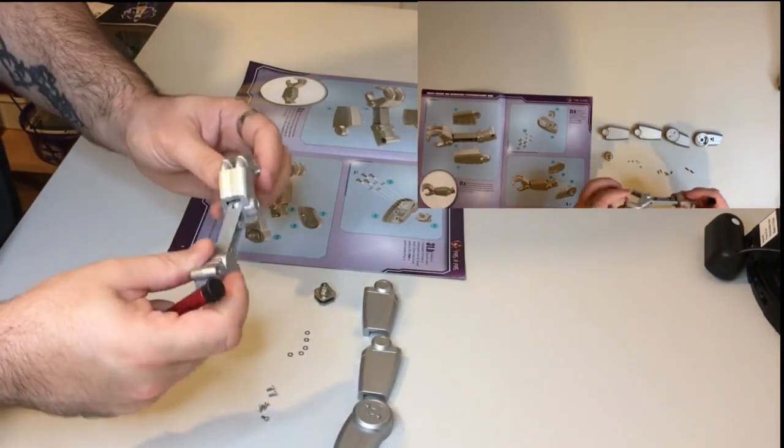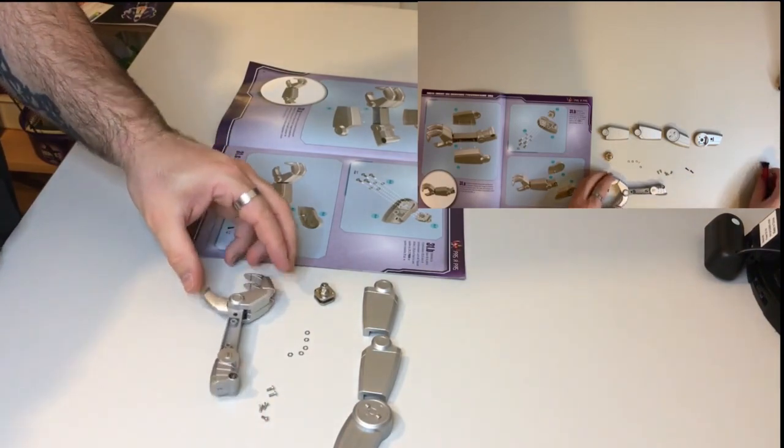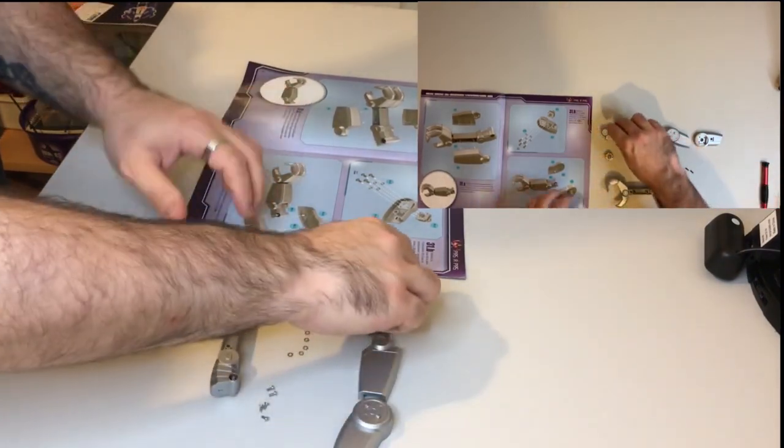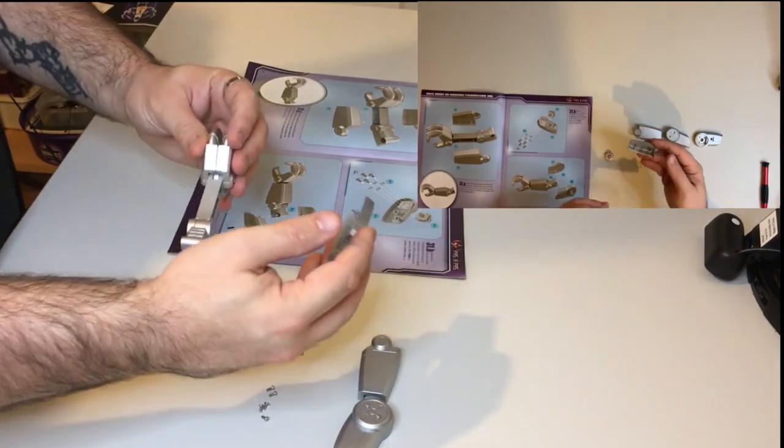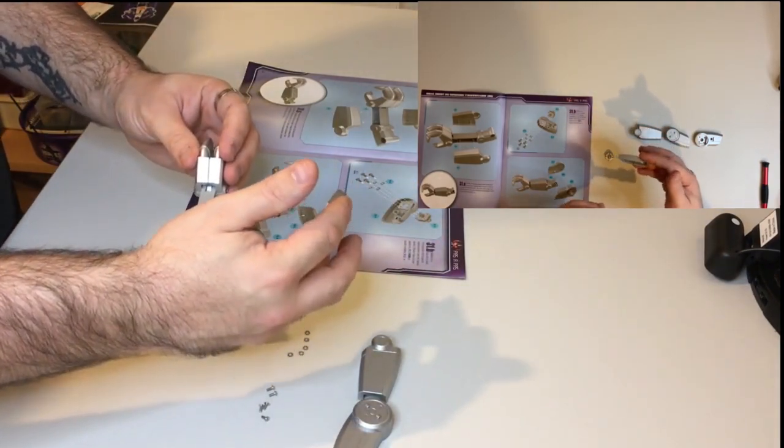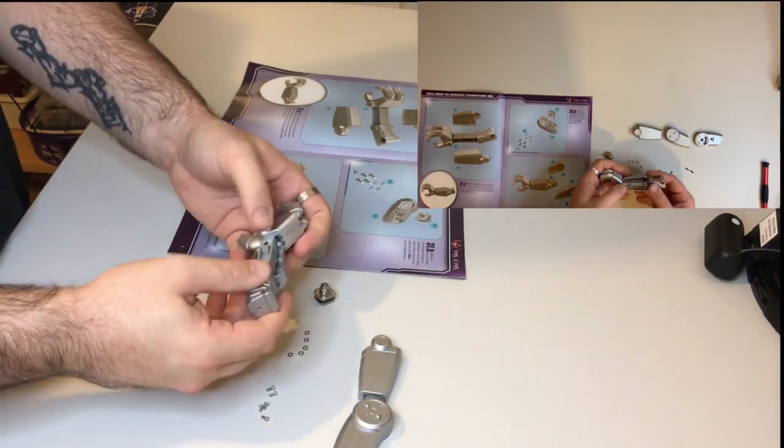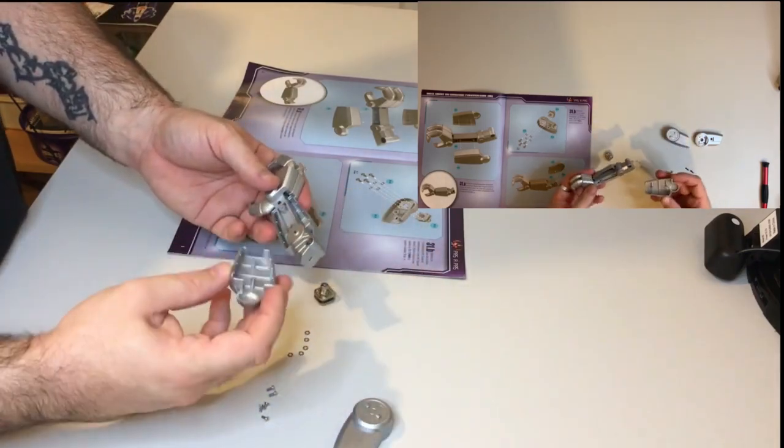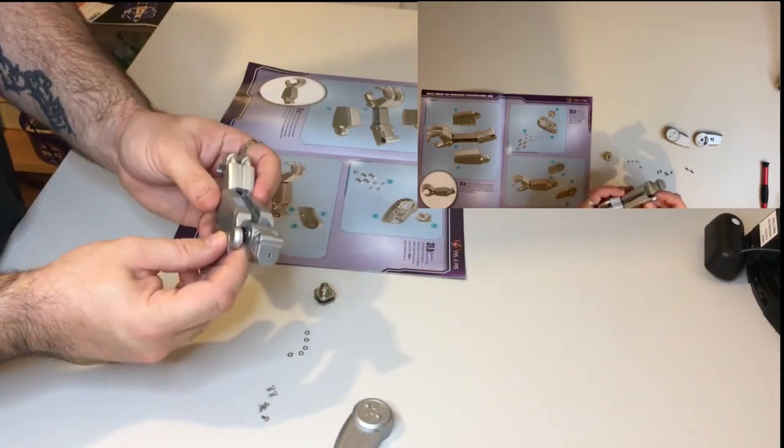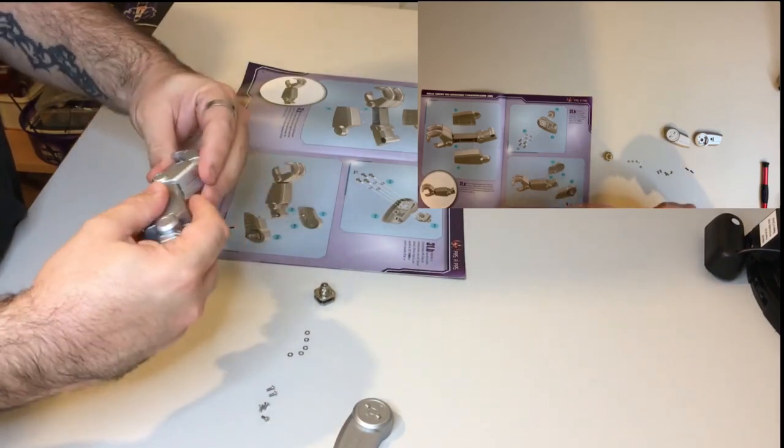So we'll grab the previous assembly from the last issue in issue 30. And first step, nice and easy, is going to be to put these two lower arm covers on. These will just click into place. So that's the first one. And there's the second. Nice and easy.